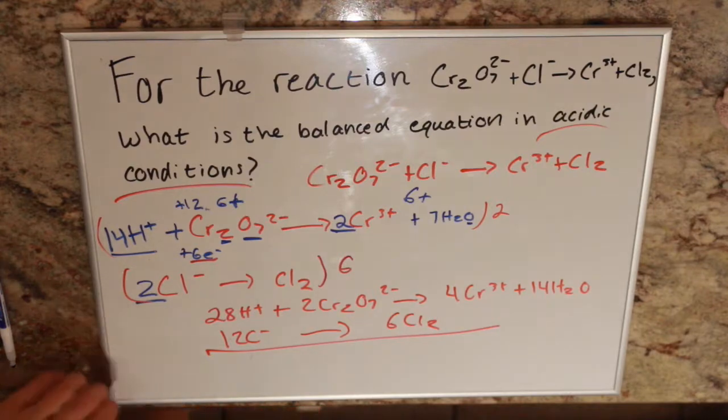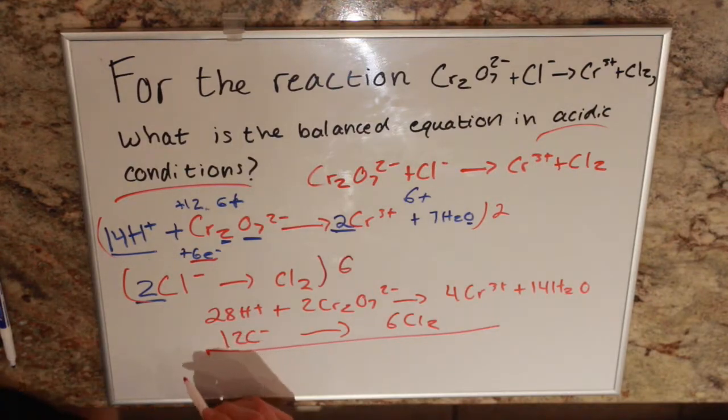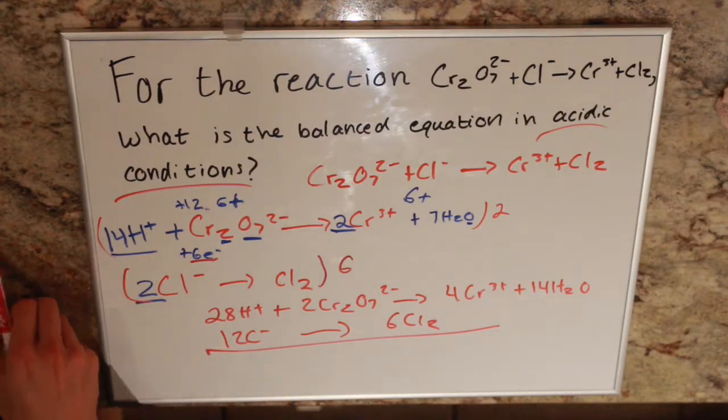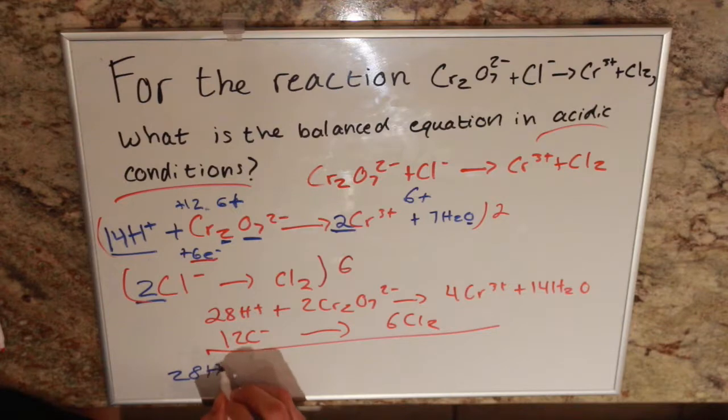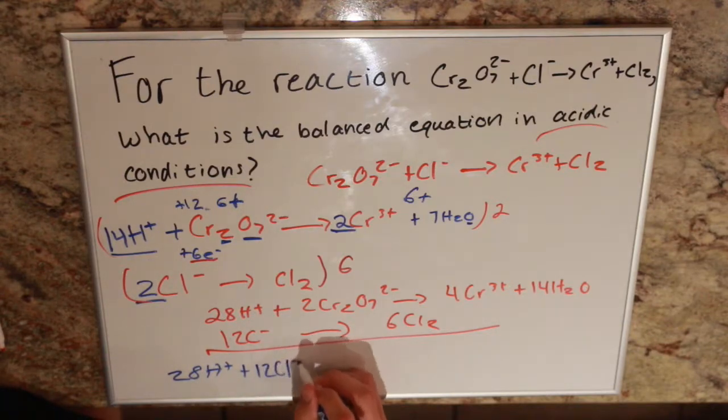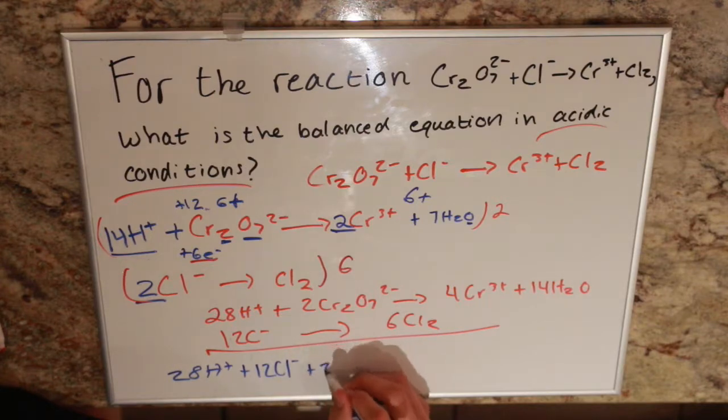I think we can't really cancel out in this case, and we're left with 28 H+ plus 2 Cr2O7 2- plus 12 Cl- yielding 4 Cr3+ plus 14 H2O plus 6 Cl2.